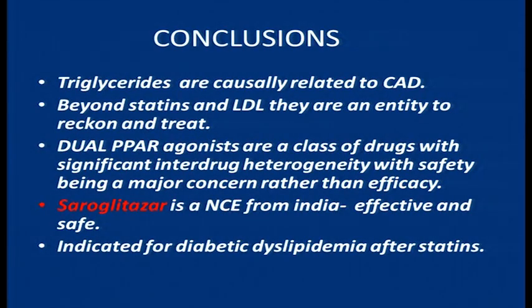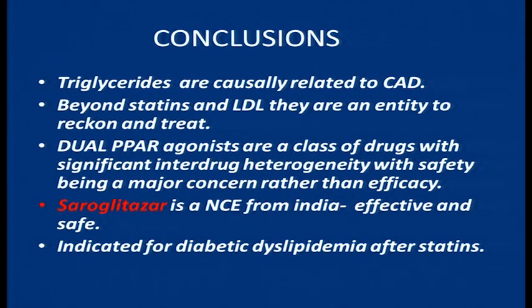To conclude, ladies and gentlemen: triglycerides are clearly causally related to coronary artery disease. Beyond statins and LDL, they are an important entity to reckon with. Dual PPAR gamma agonists are a class of drugs with significant inter-drug heterogeneity. We should not be bogged down by the fact that several glitazars were not successful — they failed because they did not have proper profiles. Saroglitazar does have that profile. We have this new clinical entity from India; it is effective and safe and is indicated for diabetic dyslipidemias, particularly hypertriglyceridemia. Thank you for your kind attention.